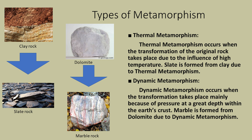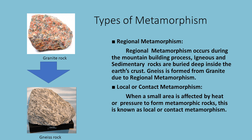There are four types of metamorphism. Thermal metamorphism occurs when the transformation of the original rock takes place due to the influence of high temperature; slate is formed from shale due to thermal metamorphism. Dynamic metamorphism occurs when transformation takes place mainly because of pressure at great depth within the earth's crust; marble is formed from dolomite due to dynamic metamorphism. Regional metamorphism occurs during the mountain-building process when igneous and sedimentary rocks are buried deep inside the earth's crust; gneiss is formed from granite due to regional metamorphism. Local or contact metamorphism occurs when a small area is affected by heat or pressure to form metamorphic rocks.